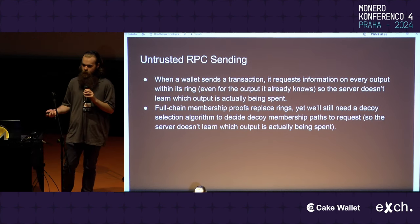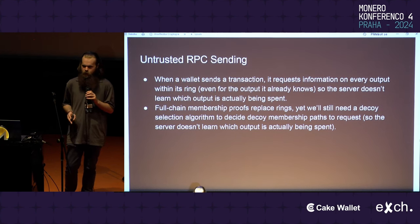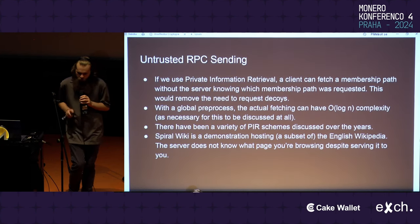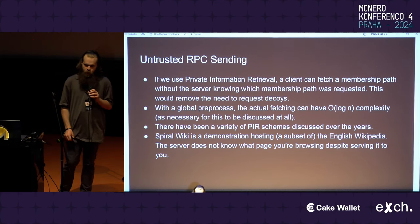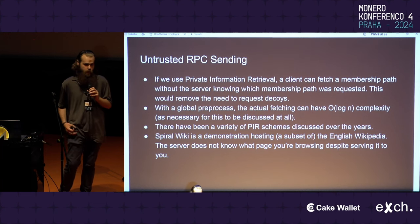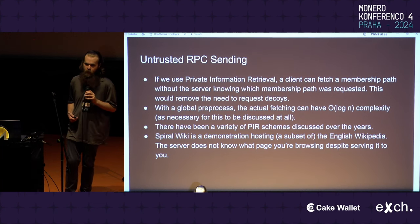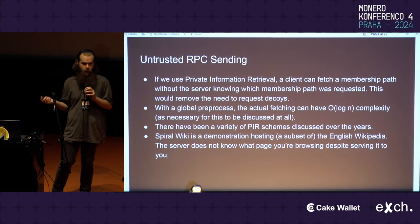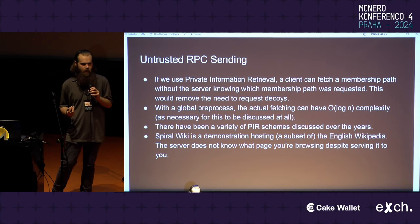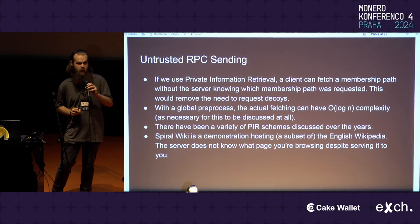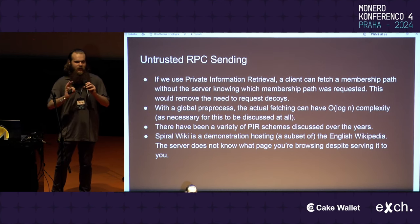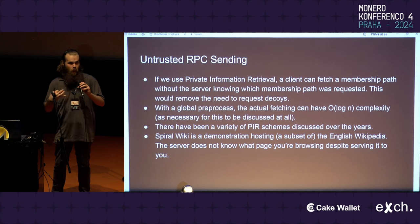We actually can fix this, and it ends up pretty viable. We could use private information retrieval, also known as PIR, to request output information — or under full-chain membership proofs, membership paths — without the server learning what info is requested. Basically, the server has a bunch of information, you request some of it, and the server cannot tell which information it just responded with. Despite the server being the one to give you the information, it has no idea what it just gave you or what you requested.